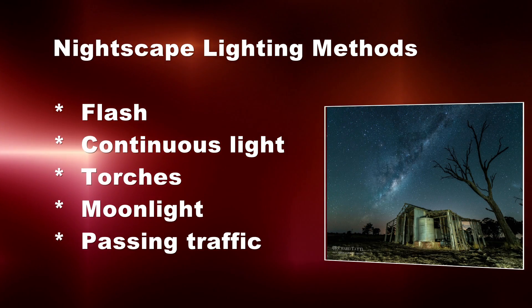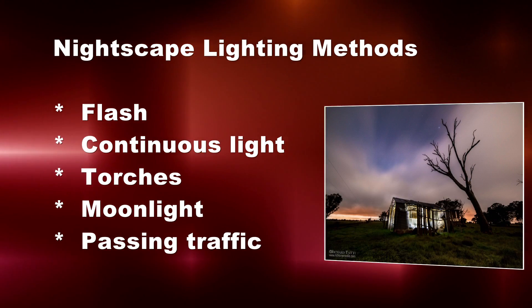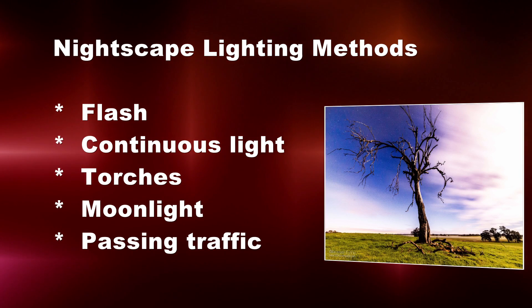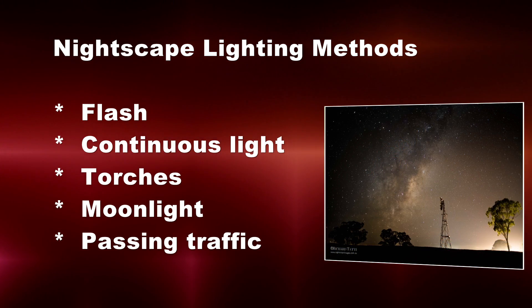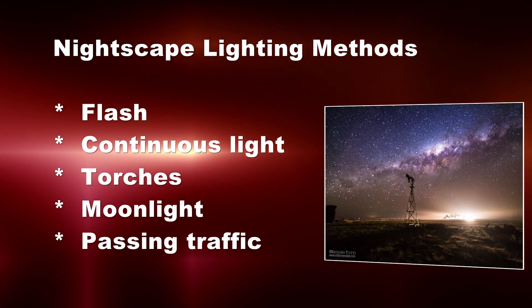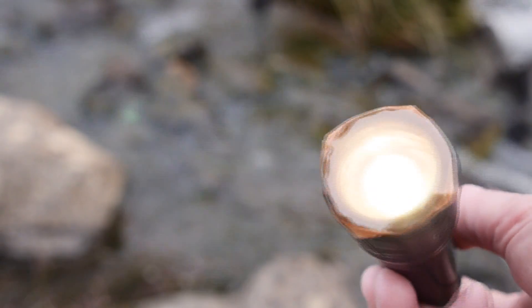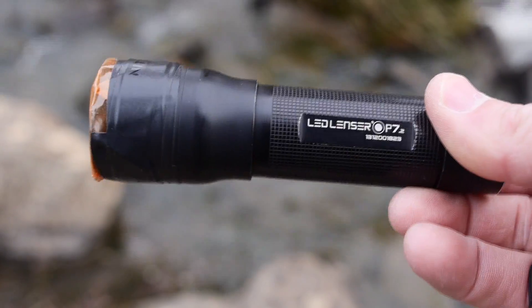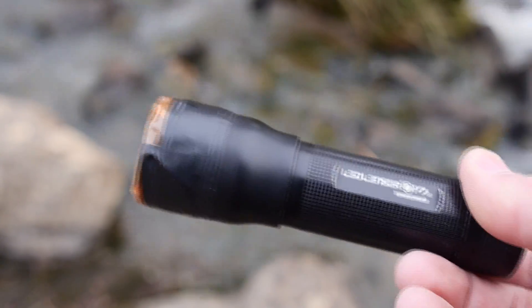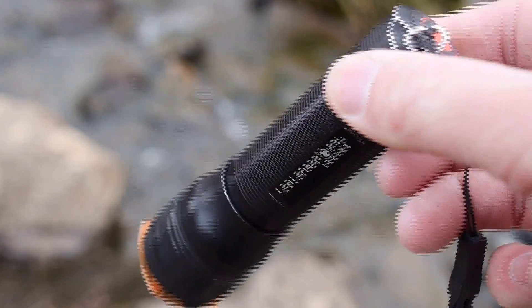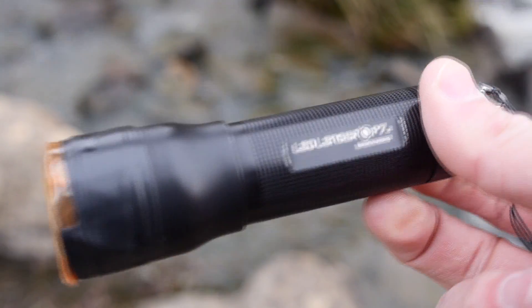Each of these methods can be effective depending on the situation, as you can see from these images on screen. However, today I want to concentrate on the two types I most often use. My favourite method of lighting is to gently light paint with torchlight — I like to use a soft edge and zoomable type. When I show people my images they immediately assume I'm using big and powerful lighting rigs, but as I'm about to show you, those big heavy lights are certainly not needed.